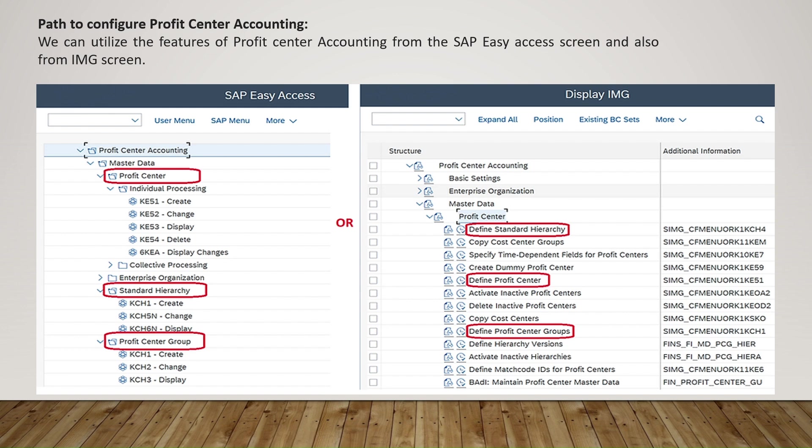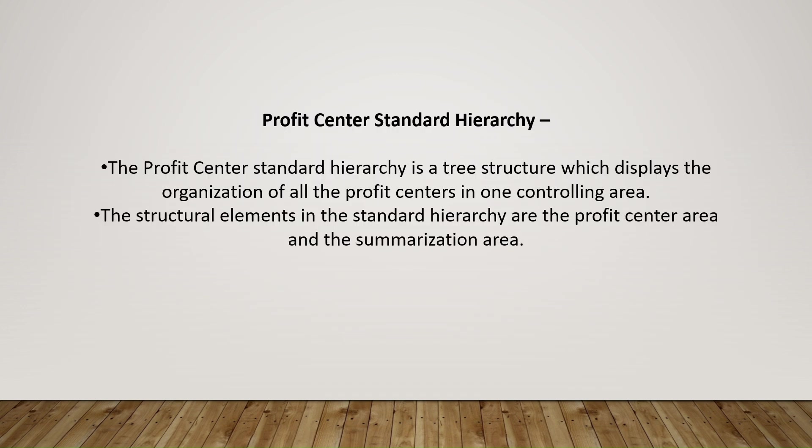The profit center standard hierarchy is a tree structure which displays the organization of all the profit centers in one controlling area. The structure elements in the standard hierarchy are the profit center area and the summarization area.